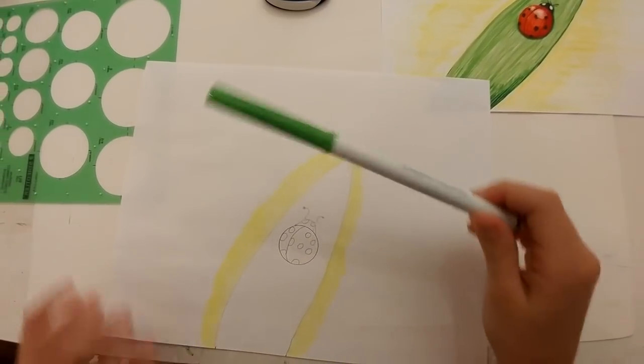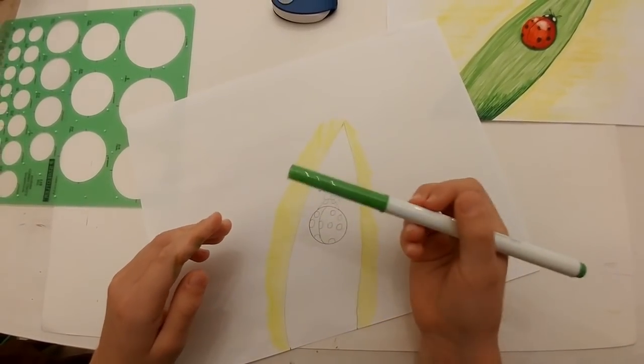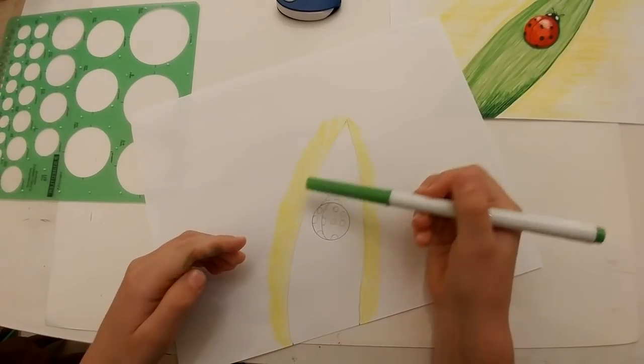To color the leaf, I'm drawing long parallel lines with light green to make it look real.